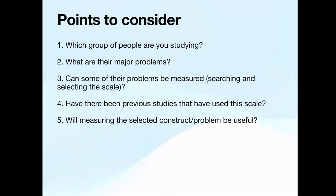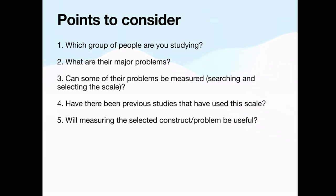So the usefulness of the study is something you need to consider as well. These are the five points: the group of people you are studying, the major problems they are facing, whether those problems can be measured or quantified, whether there have been previous studies using the scale, and finally whether the study will be useful — whether it will actually help improve somebody's life. Research should be action research that helps improve someone's life at the end of the day.